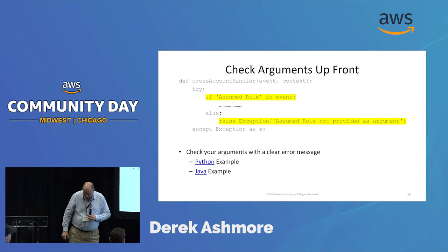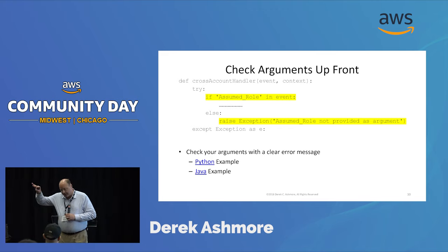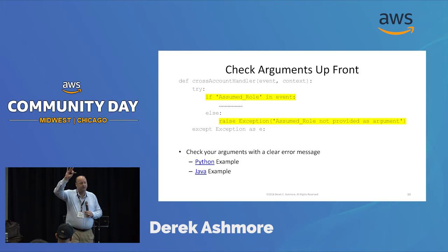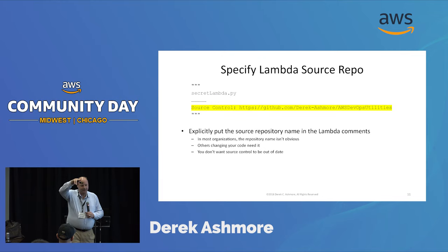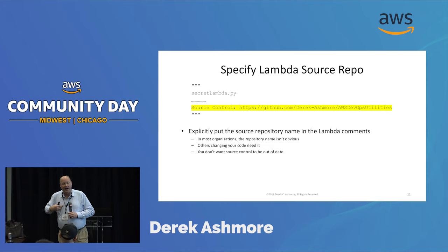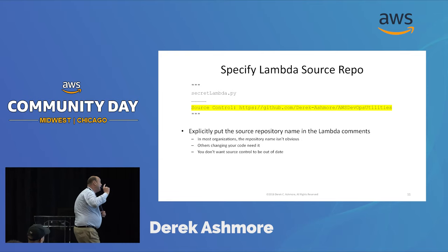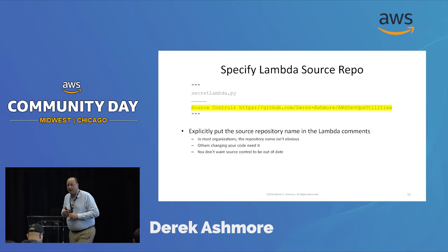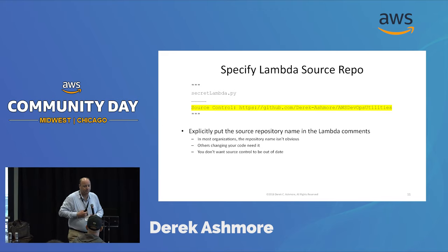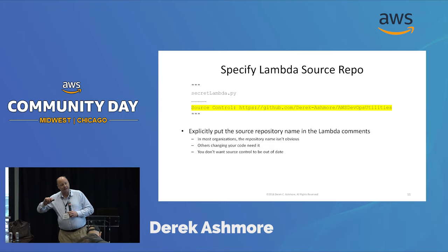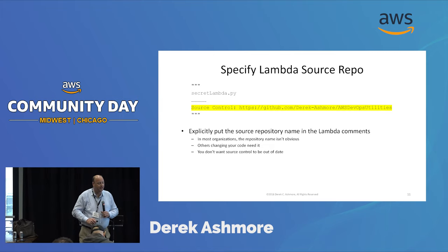For those of you that publish lambdas — how often has anybody had the problem where a lambda doesn't work quite right, you need to enhance it, and you have no idea where the source repo for that lambda is? We've experienced that too. A simple solution that increases the likelihood that somebody follows the SDLC process: as a comment to all my lambdas, I put the source repo on top, so somebody knows where to go and where to change it. If you don't do that, you'll end up with slightly different copies across all your different accounts.